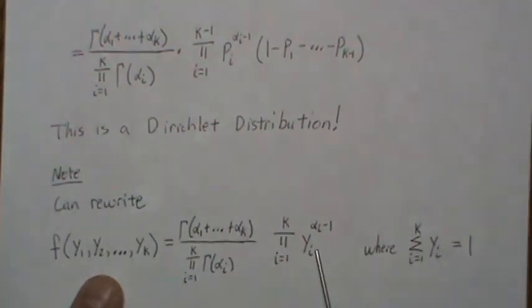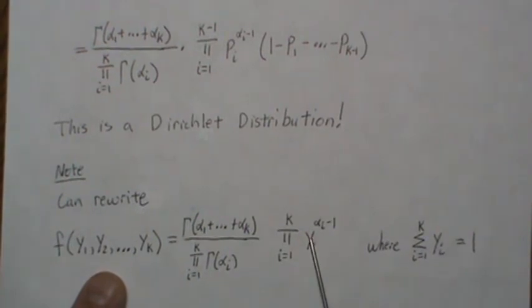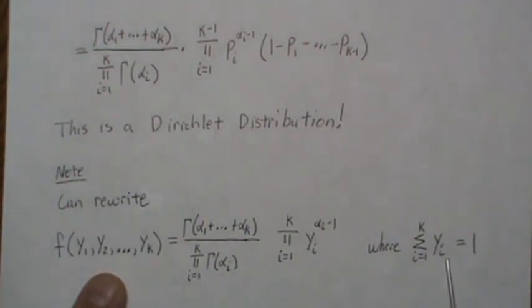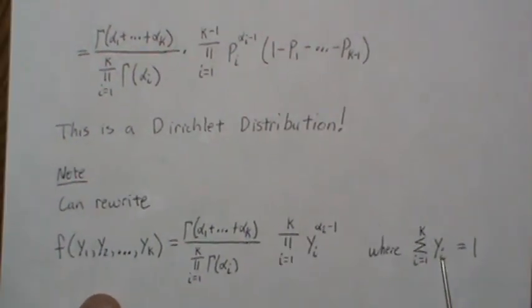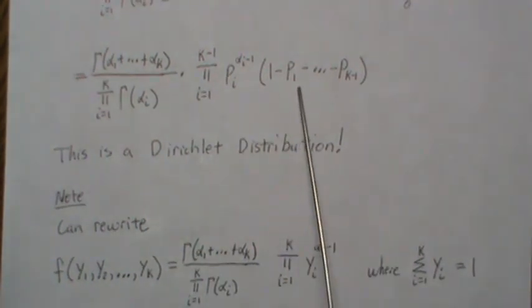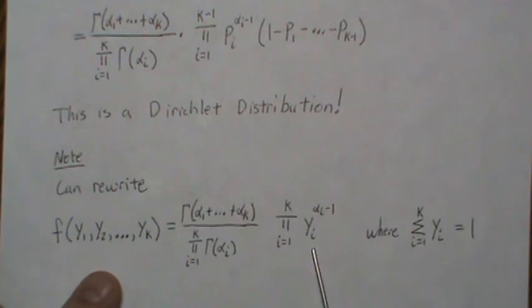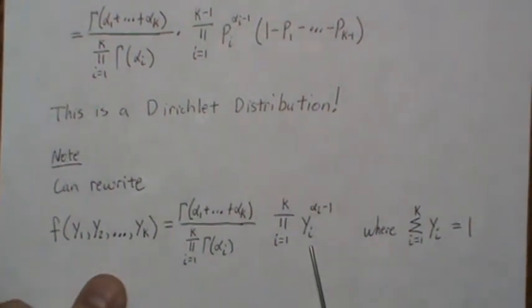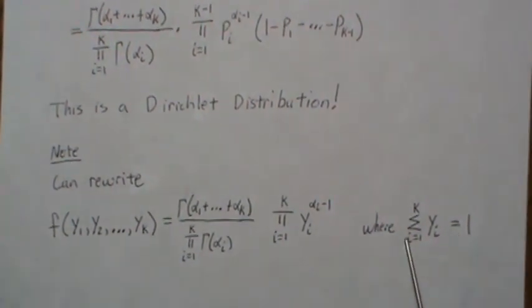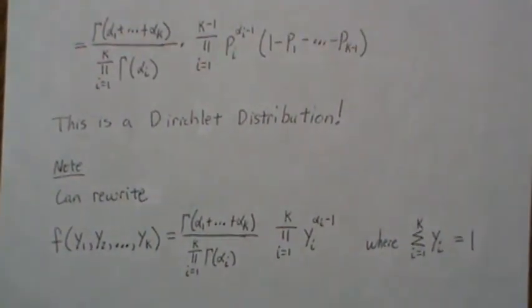And so the requirement is that all these YIs have to sum to 1. We get there in this case by using this form but this is often the form that's seen in the literature and then they have to say where the Yi sum to 1.